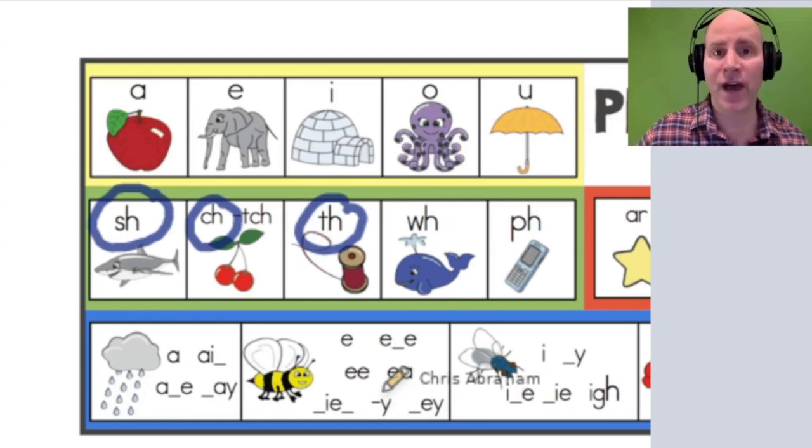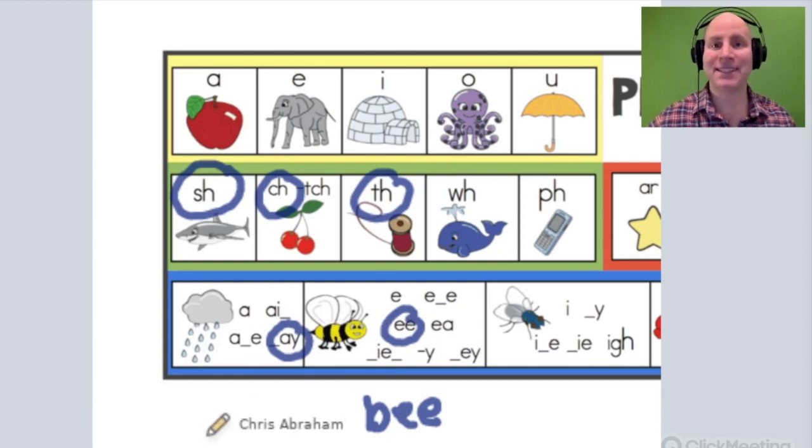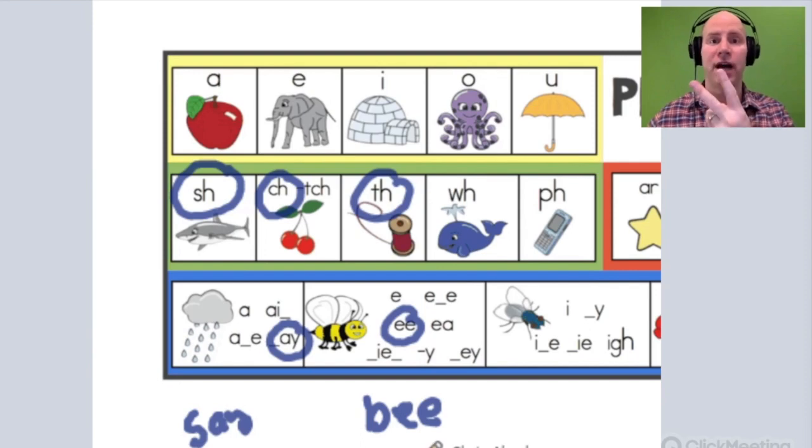Or when we have two vowels, like E-E in bee, or A-Y in say, these are called vowel digraphs. Vowel digraphs are like consonant digraphs, but they're two vowels that make one sound.